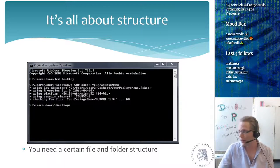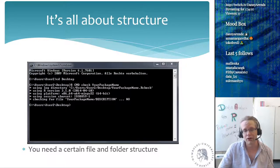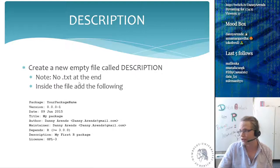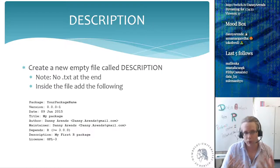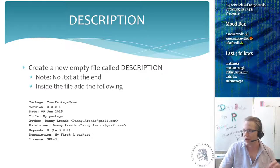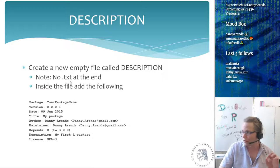The DESCRIPTION file must exist in your package folder. Creating it on Windows is tricky because the file must be named exactly DESCRIPTION in all capital letters with no .txt extension. Open Notepad++ or a similar text editor and save the file as 'DESCRIPTION' without any extension, because if it has a .txt extension R will not recognize it as a valid DESCRIPTION file.